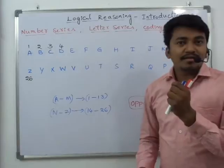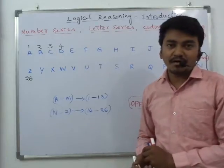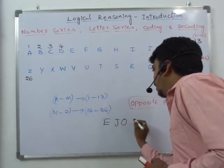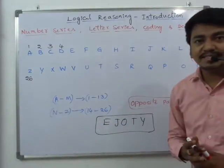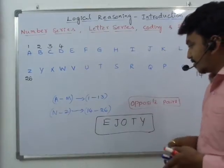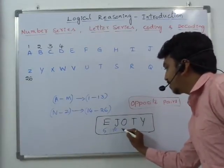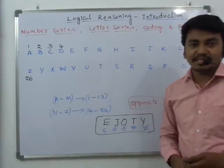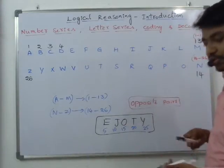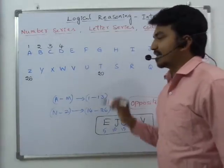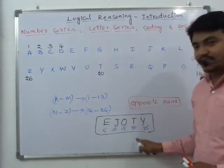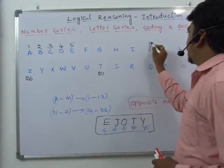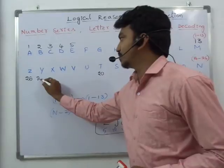If you can remember the word HOT, all these are multiples of 5: E is 5, J is 10, O is 15, T is 20, Y is 25. Or you can easily remember T20 cricket matches — T stands for 20, so the position of T is 20. The rest you can remember as multiples of 5: E is 5, J is 10, O is 15, and Y is the 25th letter.